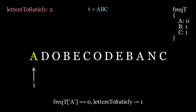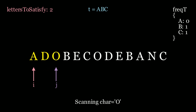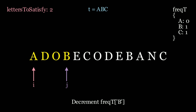Now we move the j pointer along. Is d in my frequency table? No, so we move along. o is not in the frequency table either, so we move along. Is b in my frequency table? It is, so we decrement the value by 1 — it goes from 1 to 0. Since the value is 0, we just satisfied the letter b. We saw that the current substring has one b and we needed one b because t had one b.